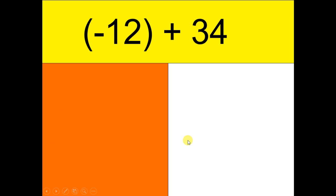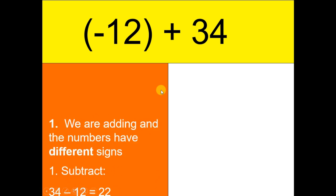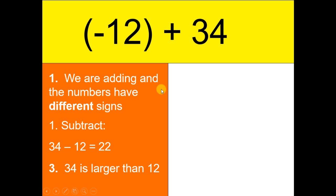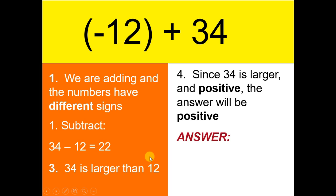Let's continue with negative 12 and positive 34. Since they have different signs, we subtract 34 minus 12, which gives us 22. This 22 is not yet the final answer — we need to check which number is larger. Since 34 is larger than 12 and 34 is positive, our final answer is positive 22.